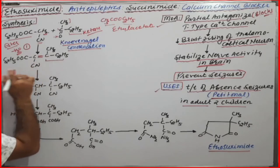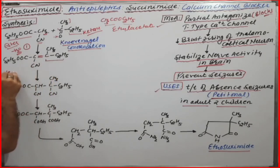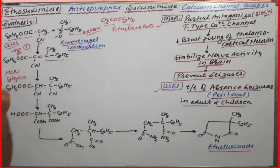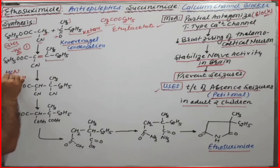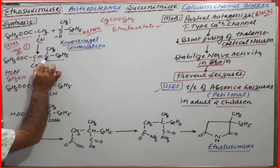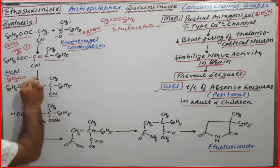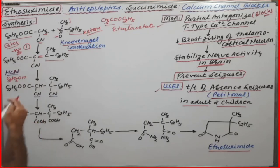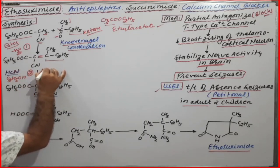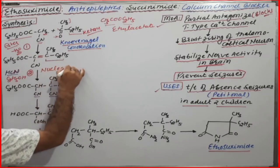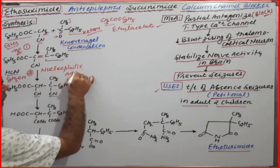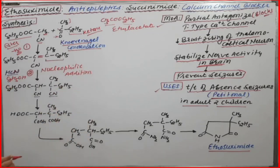The second reaction involves treating the condensed product with HCN (hydrogen cyanide) in the presence of ethanol (C₂H₅OH). This is a nucleophilic addition reaction. The cyano group attaches here and the hydrogen attaches at the double bond position.